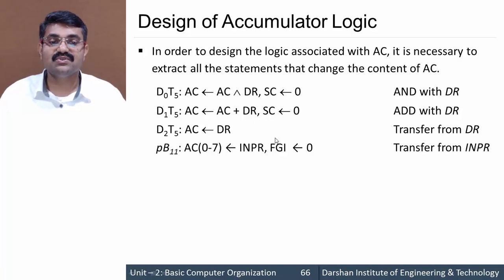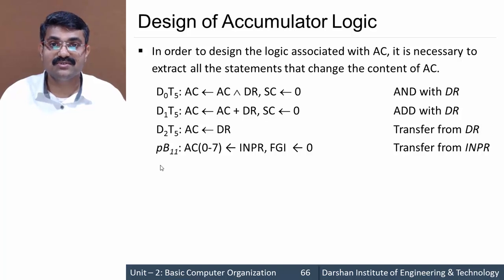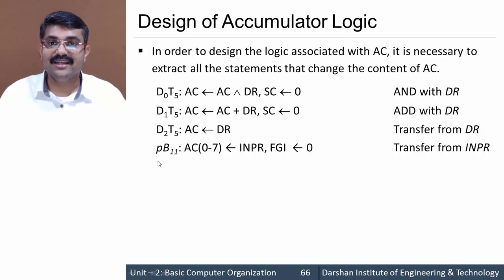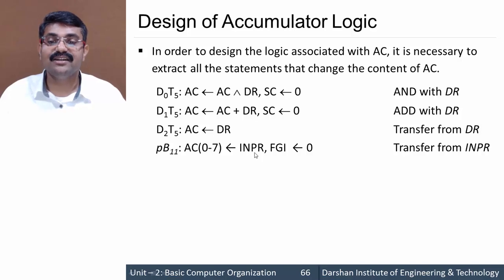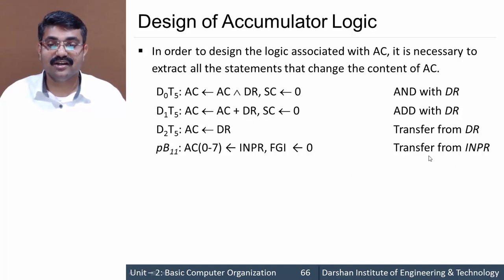The next instruction is INPR, occurring at time PB11. PB11 means D7 I T3. At time PB11, the INPR register transfers its content to AC bits 0 to 7. The accumulator is divided into two parts here because INPR is 8 bits, and its content is transferred to accumulator bits 0 to 7, so the accumulator is again loaded.